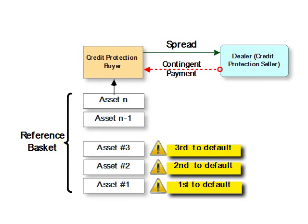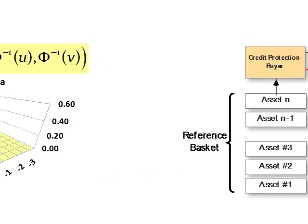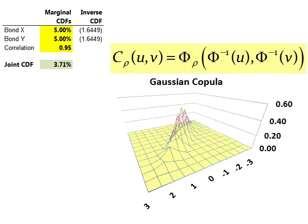And it turns out the Gaussian Copula is a very elegant and simple way of treating the complex phenomenon of default correlation. But in retrospect, it turns out to be too convenient.